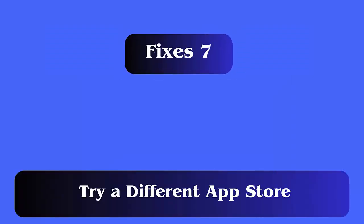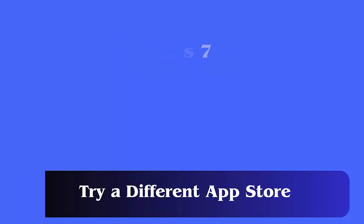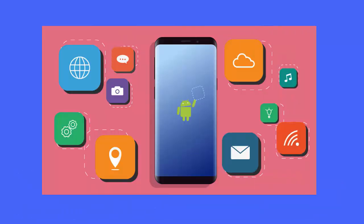Fix 7: Try a different app store. Go for a different app store when the Google Play Store issue still continues. These app stores will not pop up such kind of error while installing apps, and you can easily install apps without any error.